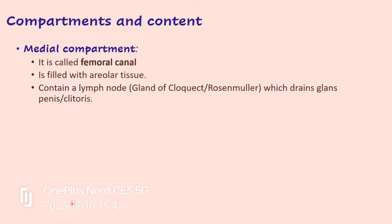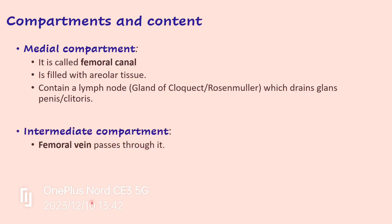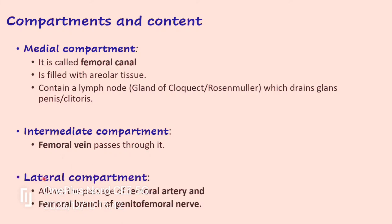To revise the contents of each compartment: the medial compartment, also called the femoral canal, is filled with areolar tissue and contains the gland of Cloquet or Rosenmuller, which drains the glans penis in males and clitoris in females — very important for MCQs. The intermediate compartment contains the femoral vein, and the lateral compartment allows passage of the femoral artery and femoral branch of the genitofemoral nerve.